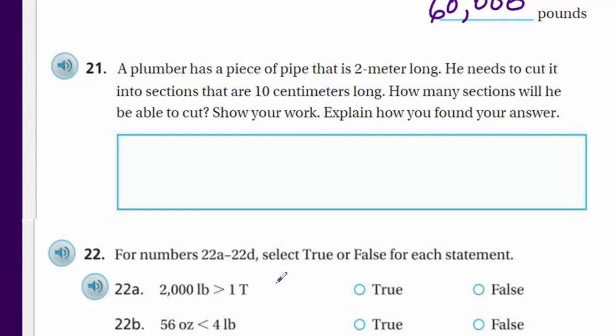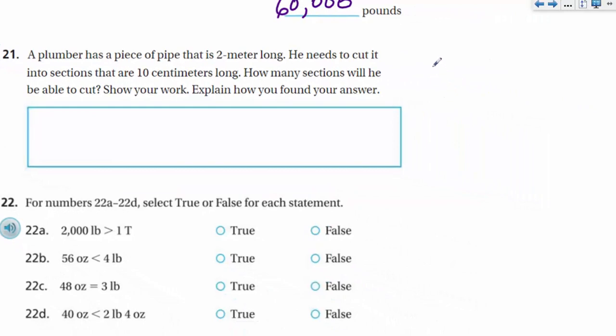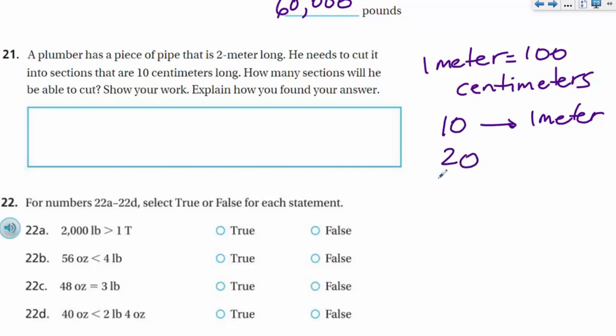A plumber has a piece of pipe that is two meter long. He needs to cut it into sections that are 10 centimeters long. How many sections will he be able to cut? Show your work. Explain how you found your answer. Fair enough. I can do that. Well, how should we do this? We need 10 meters long. I think that the biggest thing we need to understand here is that 1 meter is equal to 100 centimeters. Okay. Fair enough. So, if that 1 meter equals 100 centimeters, and they're getting cut into 10 centimeter long sections, that means that we could have 10 of those in every meter. 1 meter. All right. Because 10, 10, 10, 10, you get to 100, you get to 1 meter. We have two of them. So, it seems like we're just going to double that. So, our 10 now is going to turn into 20.